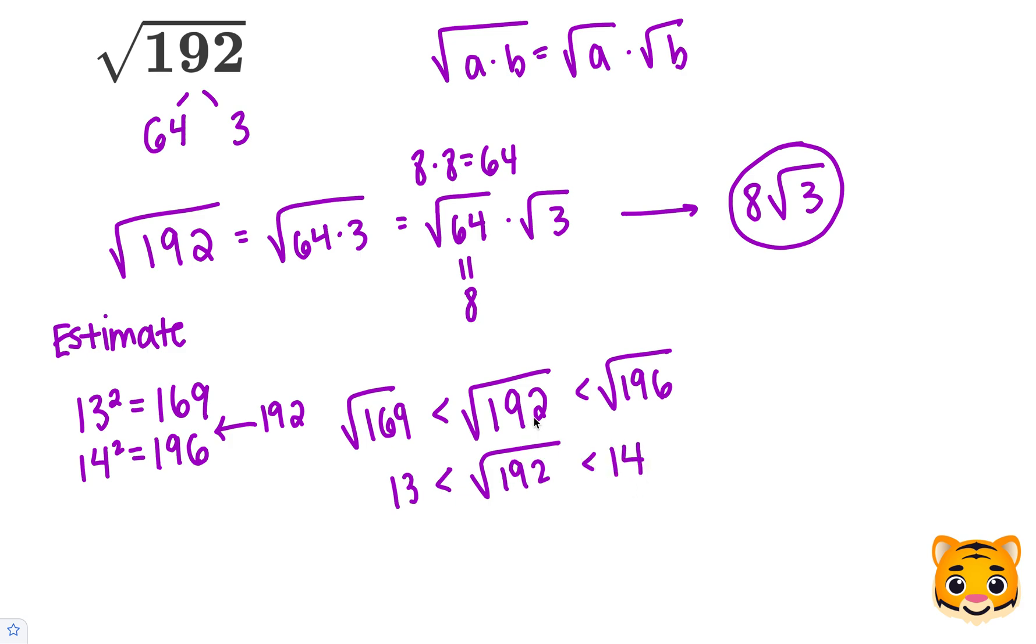Now we know that 192 is closer to 196, so the square root of 192 will be closer to 14. Let's try out 13.9 and see how close that gives us to 192. 9 times 9 is 81. We'll carry the 8. 3 times 9 is 27, plus 8 is 35. Carry the 3. 1 times 9 is 9, plus 3 is 12.